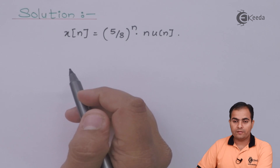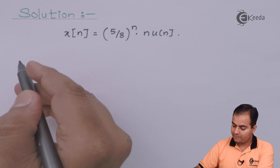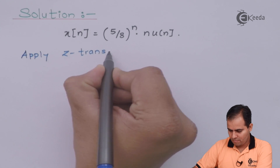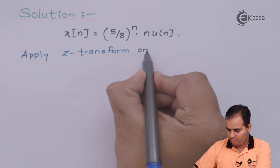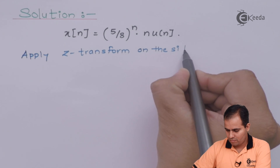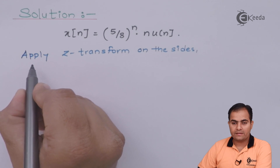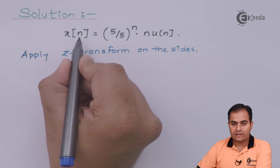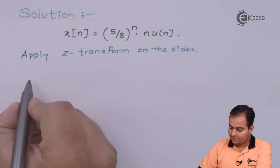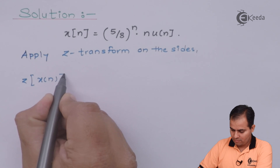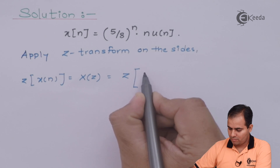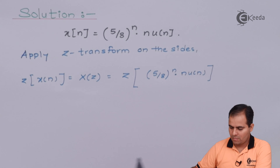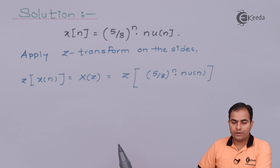First, apply the Z-transform on the whole function. If you apply Z-transform on both sides, X(n) is represented by X(Z), and we have (5/8)^n * u(n).